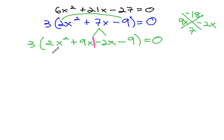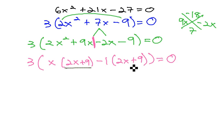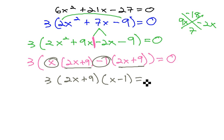Factoring by grouping, we'll keep the 3 outside of everything, and it still equals 0. On the left side, we can pull out an x, leaving behind 2x + 9, and on the right side, a negative 1, leaving behind 2x + 9, being careful of signs. The 2x + 9 matches, so we have 3 times (2x + 9) times (x - 1) = 0. And now, it's completely factored.